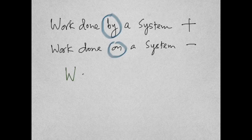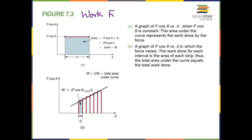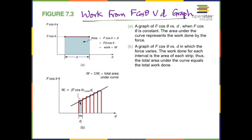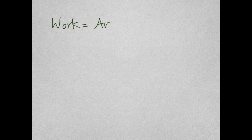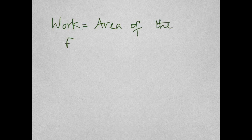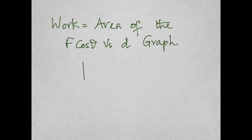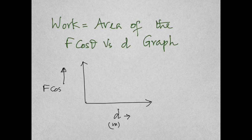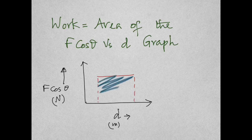Work done on a system means you're working against something, and the formula for work is F·D·cosine theta. Work done can also be found from the graph drawn between F cosine theta and d — all we have to do is find the area of the graph. In this diagram, the area is rectangular, so length times width gives you the work. So work can also be found from the area of the graph drawn between F cosine theta versus d.